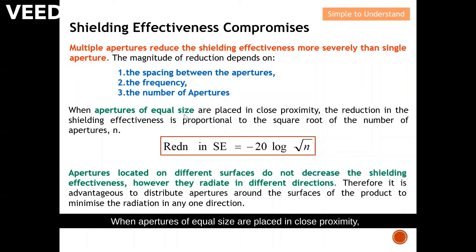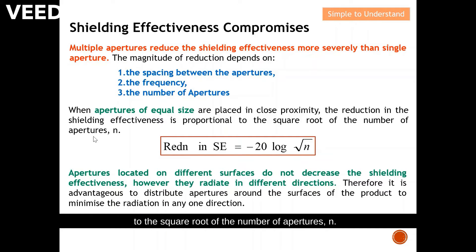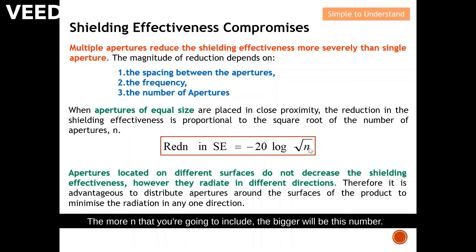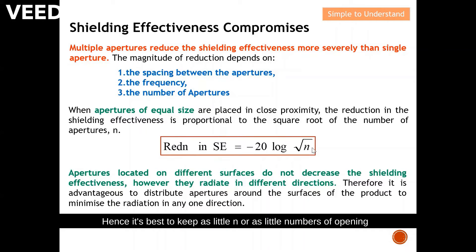When apertures of equal size are placed in close proximity, the reduction in shielding effectiveness is proportional to the square root of the number of apertures N. This is the equation to calculate the reduction of shielding effectiveness. The more apertures N you include, the larger this number becomes, and therefore the reduction in shielding effectiveness also increases. Hence, it is best to keep as few openings as possible to maintain better shielding effectiveness.